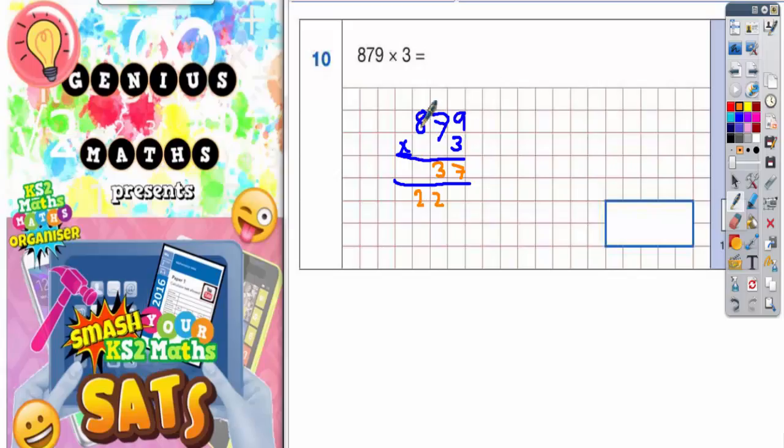And 3 eights are 24. Plus that 2 is 26. Put your 6 in, carry the 2. But because we've finished, we've reached the end of the column now. This 2 that we just carry can just go straight in. So your final answer is 2637.